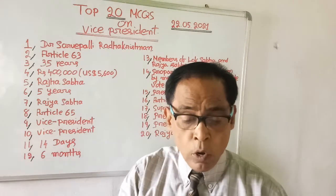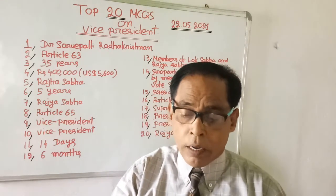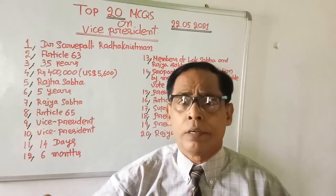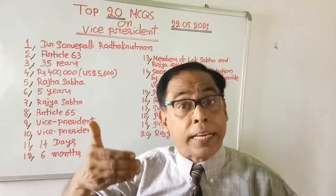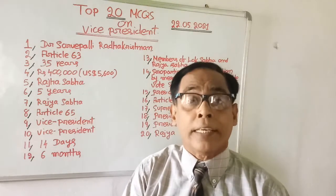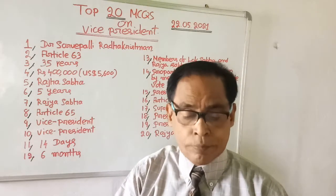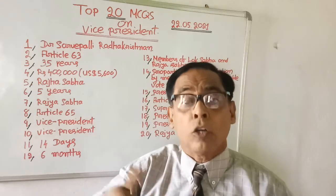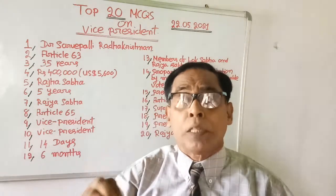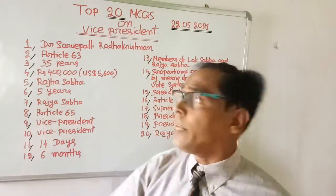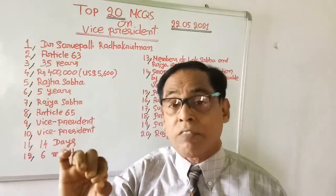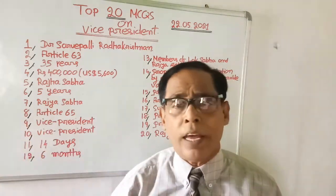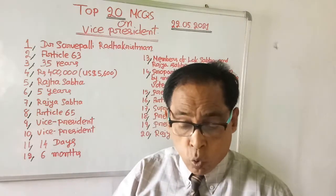Question number three: What is the minimum age required for the office of Vice President? What must be the minimum age to become Vice President of India? Choices are thirty years, thirty-two years, twenty-nine years, and thirty-five years. The answer is thirty-five years. Unless a person is thirty-five years old, they cannot contest for the office of Vice President.